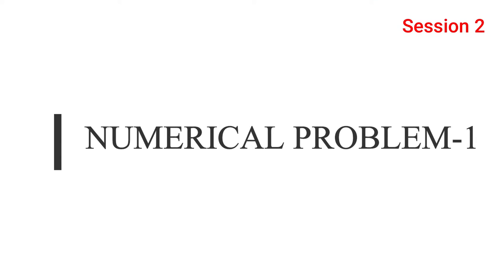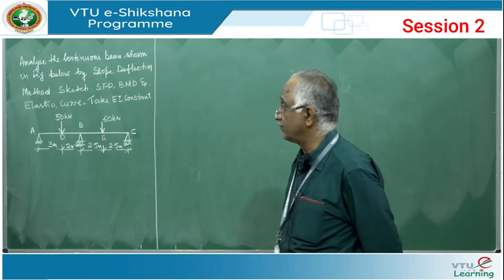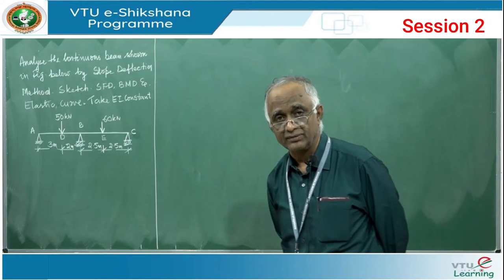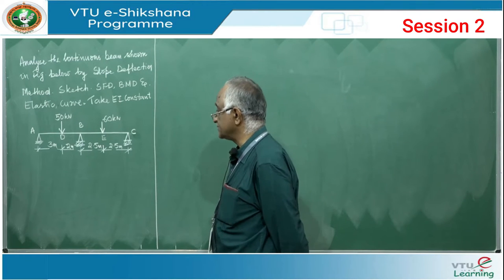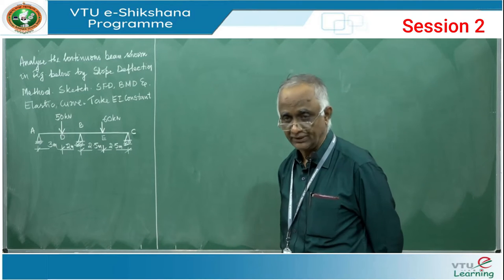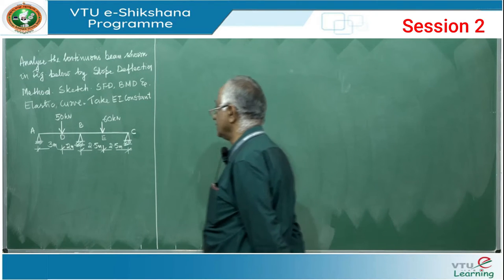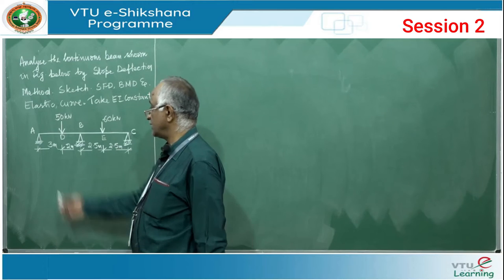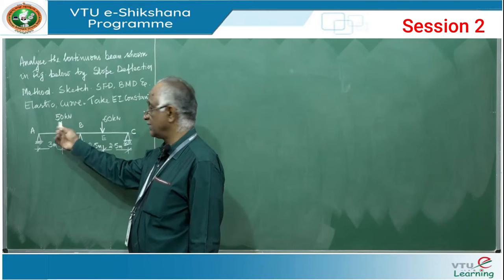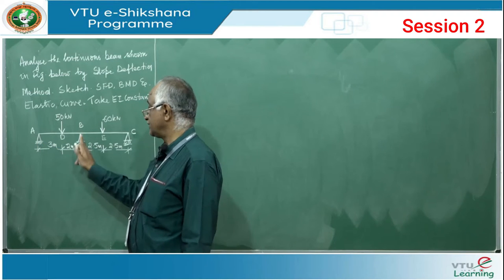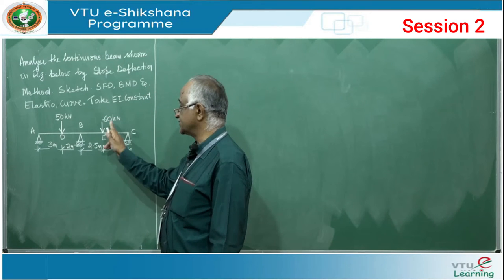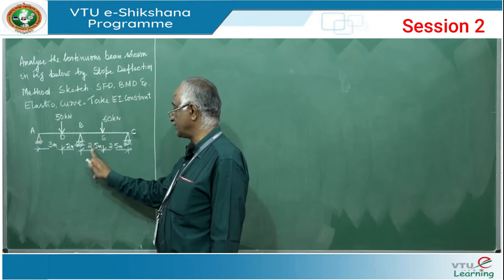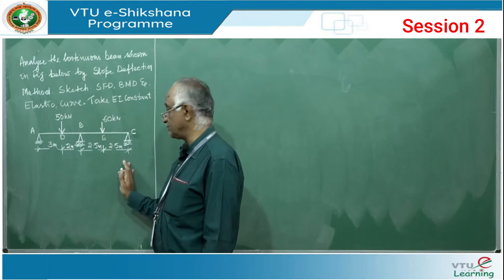Problem: Analyze the continuous beam shown by the slope deflection method and sketch the shear force diagram, bending moment diagram, and elastic curve. EI is constant throughout. The beam is ABC with two spans. Span AB has a point load of 50 kN at 3 meters from A and 2 meters from B — an unsymmetrical load on a 5-meter span.